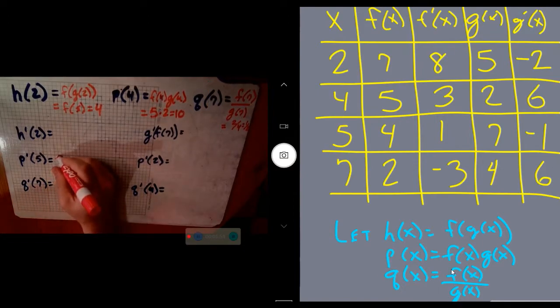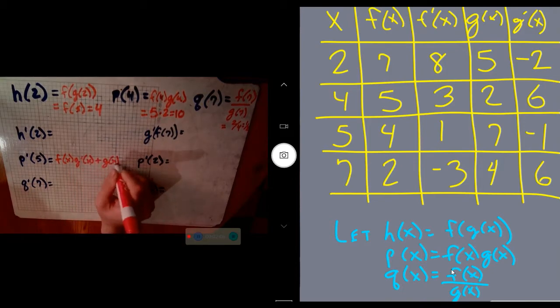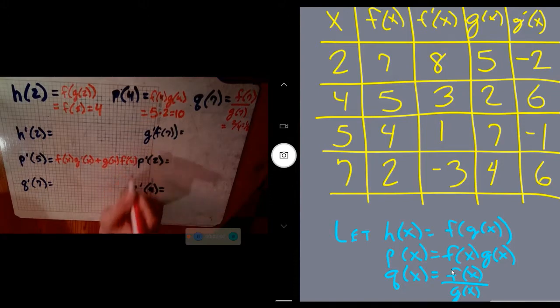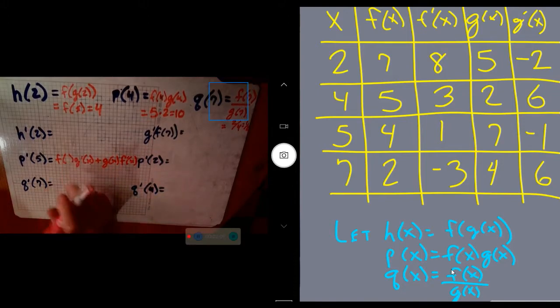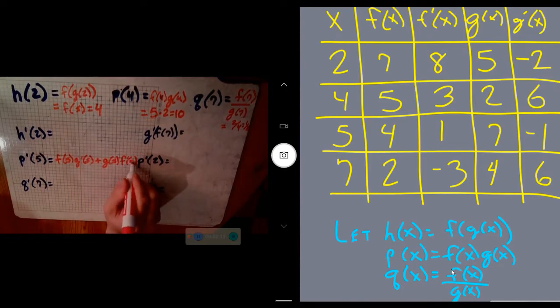The derivative of that would be the first times the derivative of the second—f(x) times g'(x)—plus the second times the derivative of the first. Now we can use this because we have 5 being the place to evaluate. So we're going to plug in all these values.